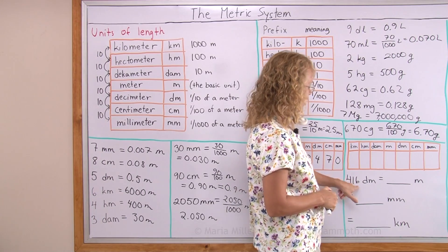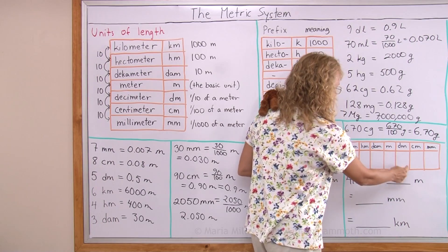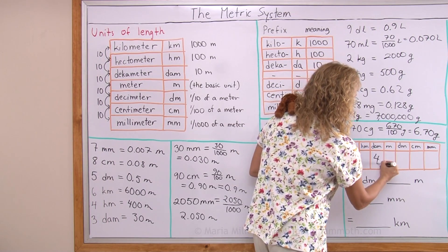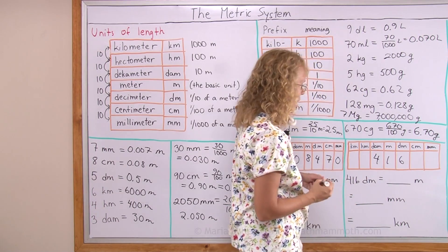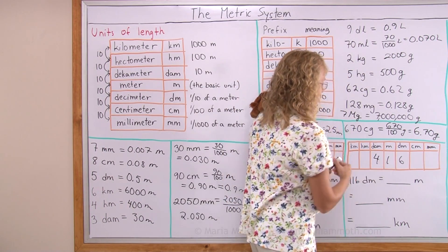Another example. I have four hundred and sixteen decimeters. So I have to find decimeters. And imagine the decimal point is here: 416. Then to read it in meters, my decimal point moves here: 41.6 meters.